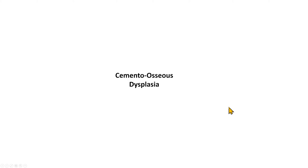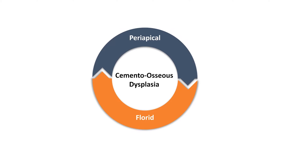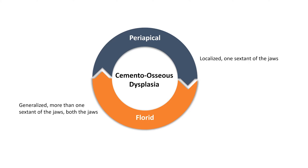Cementoosseous dysplasia can be classified into two types: periapical and florid. Periapical cementoosseous dysplasia is localized, limited to one sextant of the jaws, most commonly the mandible. Florid is generalized, involving more than one sextant and often both jaws. Some literature states two or more quadrants qualify as florid, while others insist on at least three or more quadrants — this classification has minimal consequence or impact on patient care.